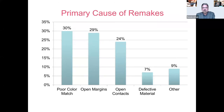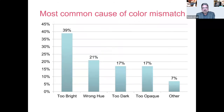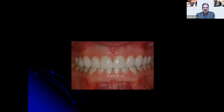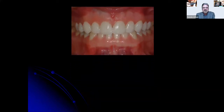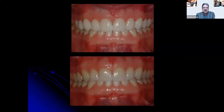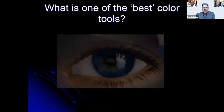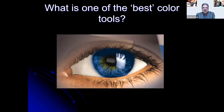A single shade can look very different because of lighting. The same tooth can appear like a B1 in one light and an A3 in another. We want to make sure we have correct lighting — we'll talk about that shortly. The best color tool is our eye, but we must ensure the right surroundings and tools when taking shades.